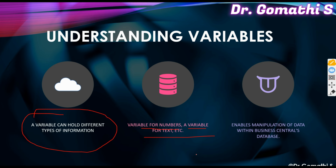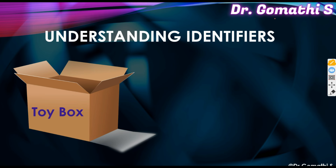For example, imagine you have a piggy bank which we'll call 'savings.' Every week you put your allowance into the piggy bank — the piggy bank is like a variable. You are storing a value into 'savings.' This is how we can relate a variable to a real-world object.